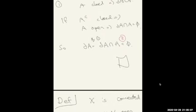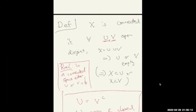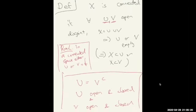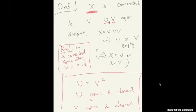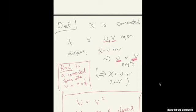This shows A implies B, B implies C, C implies A, so these are all equivalent. Connectivity is related to the existence of open and closed sets. The main definition: X is connected if whenever you express it as a union of two disjoint open sets, then one of these sets must be empty.